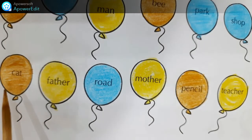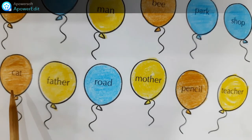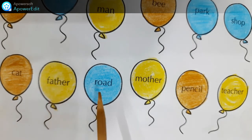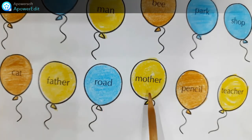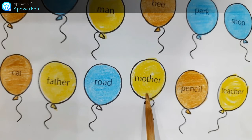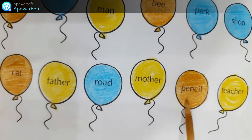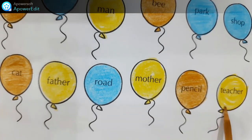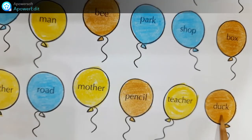Cat is a name of an animal — it comes under thing, so we will color it mustard. Father is the name of a person, so we will color it yellow. Road is the name of a place, so we will color it blue. Mother is the name of a person, so we will color it yellow. Pencil is a thing, so we will color it mustard. Teacher is a name of a person, so we will color it yellow. And last, duck is the name of an animal, so we will color it mustard.